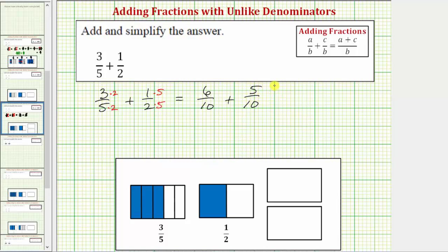Now that we have a common denominator, or in this case the least common denominator, we can go ahead and add the fractions. The denominator stays the same and we add the numerators. Six plus five is equal to eleven. So our sum is eleven tenths.